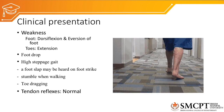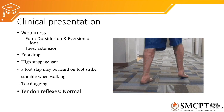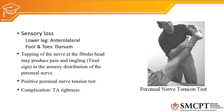Tendon reflexes are normal since the ankle reflex is not supplied by the common peroneal nerve. There is sensory loss over the anterolateral aspect of the leg and dorsum of the foot. Tapping the nerve at the fibular head may produce pain and tingling — a positive Tinel's sign. The peroneal nerve tension test is positive: with hip flexed and knee extended, plantar flexion and inversion of the foot reproduce pain in the distribution of the common peroneal nerve. Ankle joint stiffness, muscle atrophy, and gastrosoleus tightness are common complications due to foot drop.